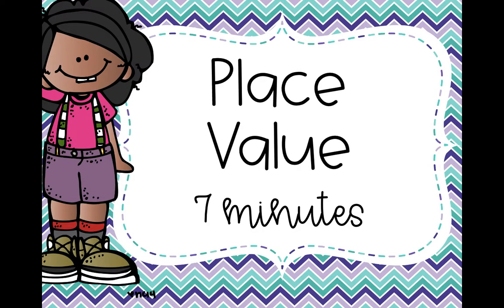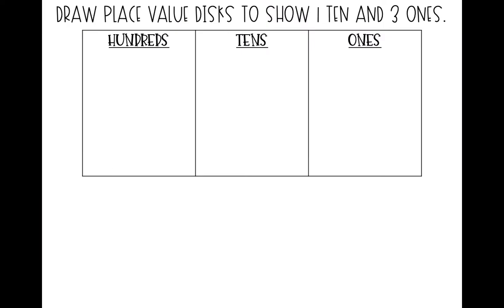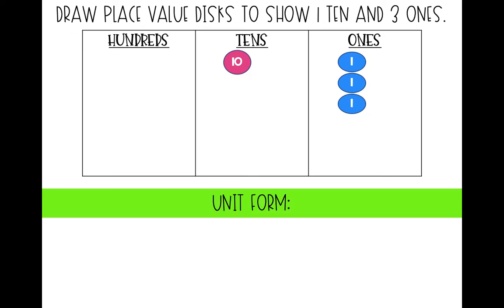We're going to review some place value again. First, draw some place value disks to show 1 ten and 3 ones. Feel free to pause the video as you need to give yourself enough time to draw everything. Your place value chart should look like this: 1 ten, 3 ones. What is the unit form shown on my place value chart? That's exactly right — 1 ten, 3 ones.